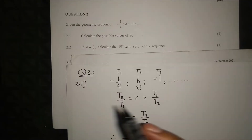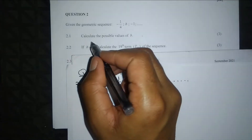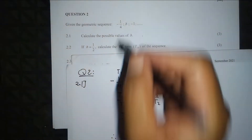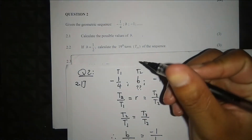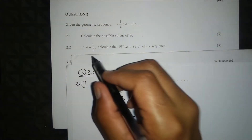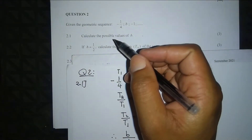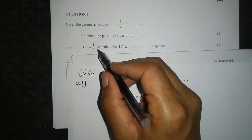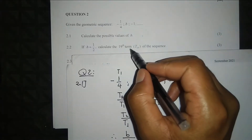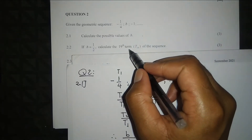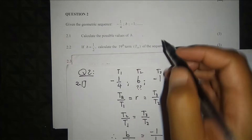So b squared equals one over four. We square root both sides. Because the exponent is an even number, we get plus or minus one over two. So b has two values: positive one over two and negative one over two. For question 2.2, we use the positive value, b equal to one over two.